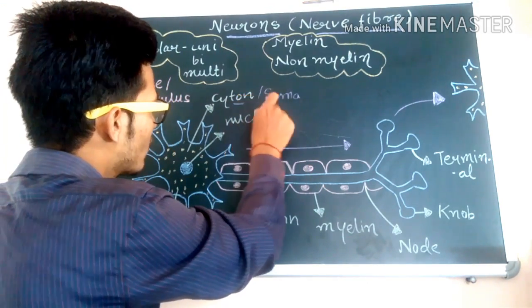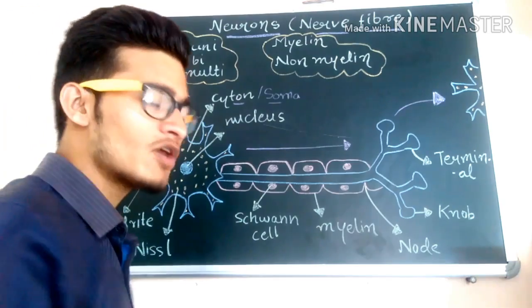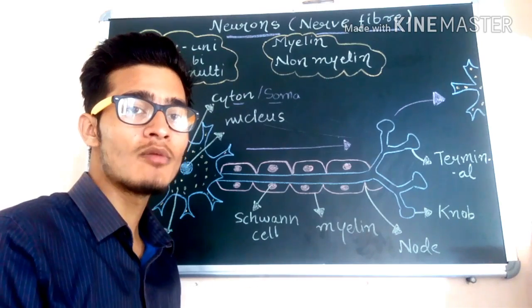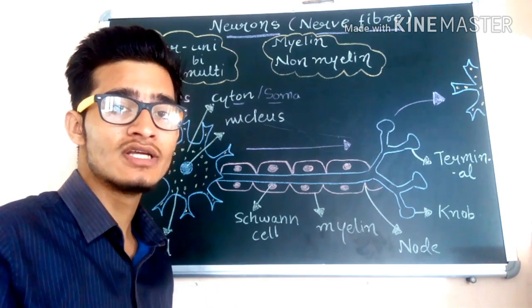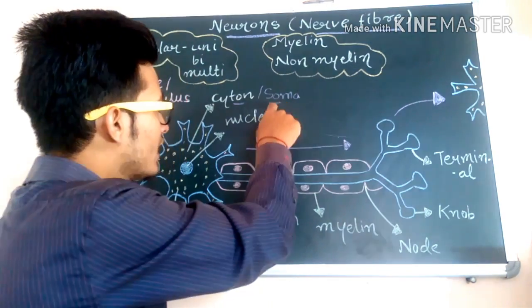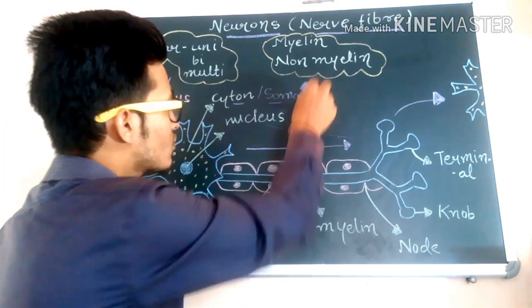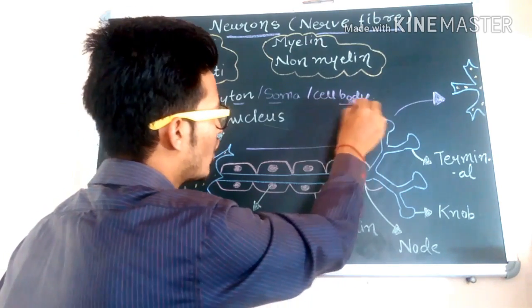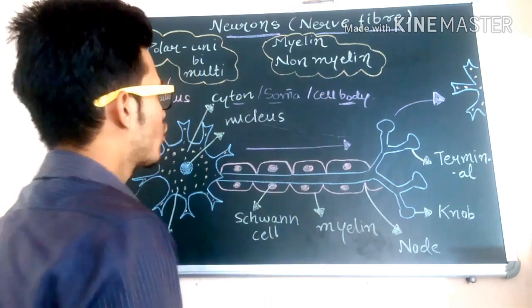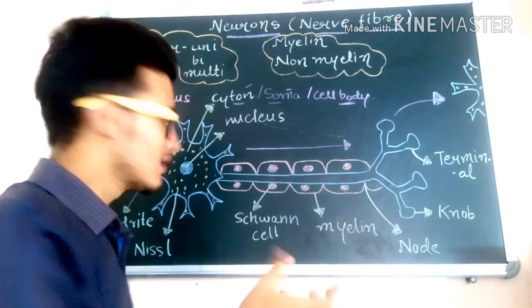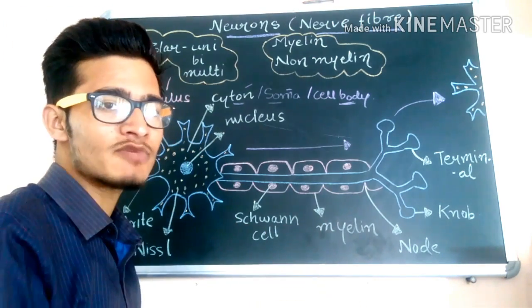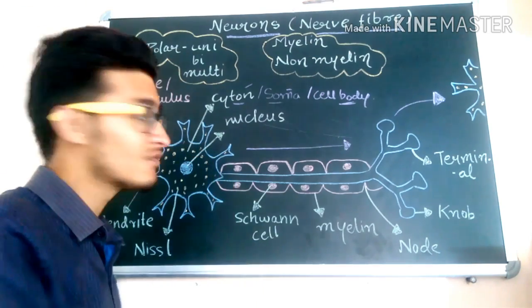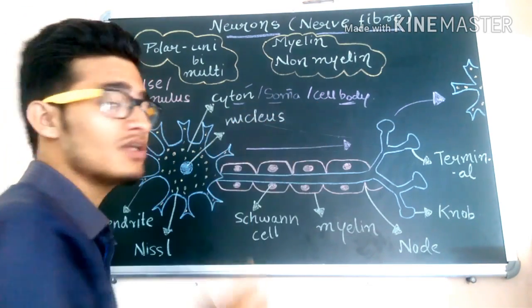Why is it known as cytone or soma? You know very well about chromosomes. Chromosomes are known as chromo-soma, which simply means chromo means colored and soma means body. So chromosomes are the colored body. Similarly, this is a cell body, also known as soma and cytone, because it has different kinds of cytoplasmic granules as well as cytoplasmic organelles present in it.